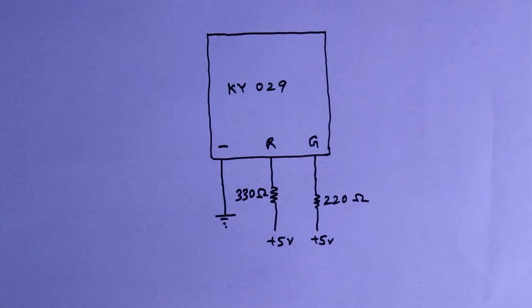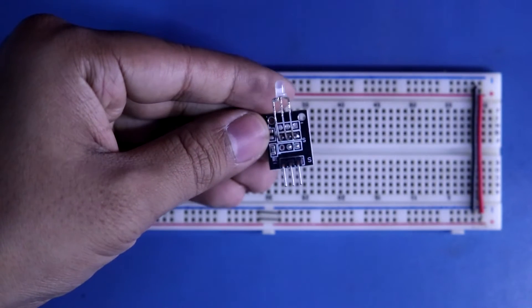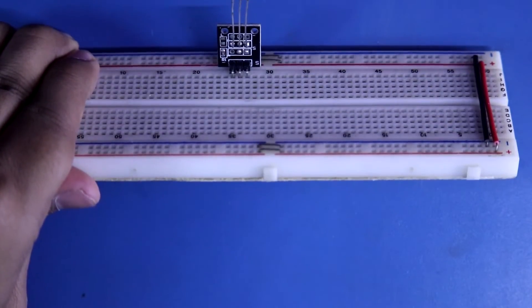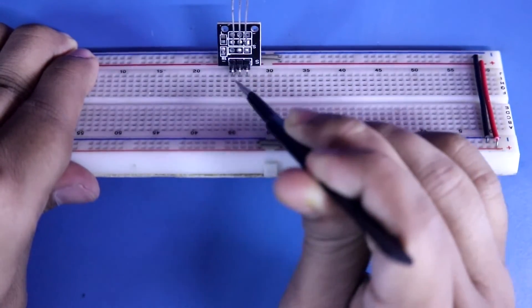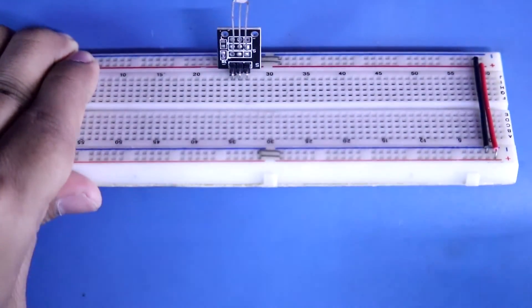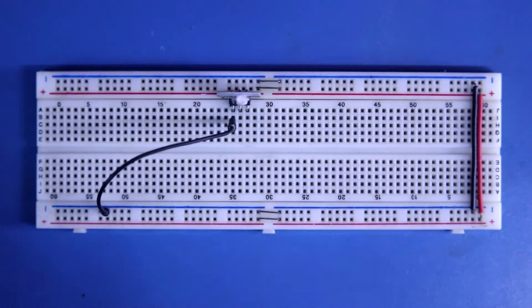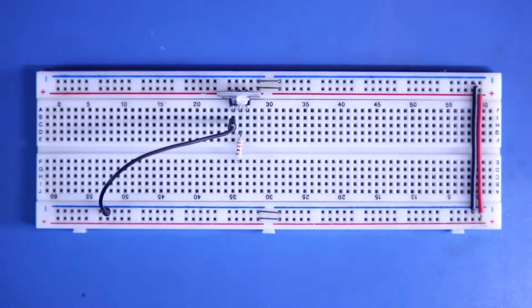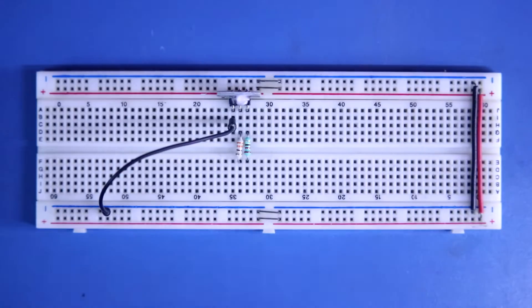Now we will do the practical on the breadboard. This is our module. Pins are, this is green pin, red pin and ground pin. Ground pin is directly connected to the negative rail. Connecting 330 ohms resistor with red pin and 220 ohms resistor with green pin.